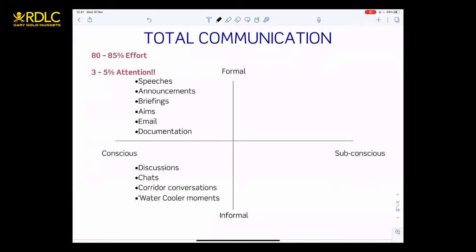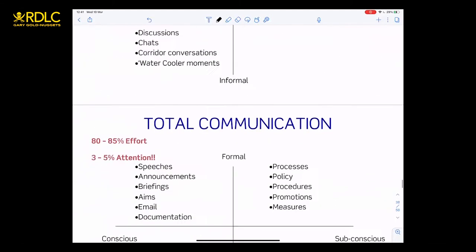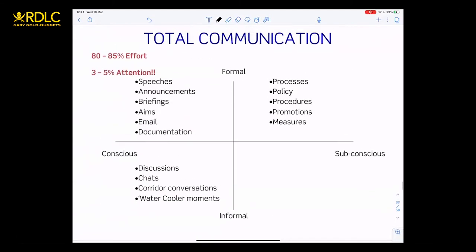And then you've got the formal subconscious stuff up here, which is actually where all your policy, procedure, process sits. Because that's not conscious communication. You bump up against a policy and you work out oh that must matter. Or you see who somebody gets promoted and you think they must be doing the right things. So subconsciously that signals things in culture, as do your measures and metrics. Stuff you measure and metric lets people know subconsciously what you must value.